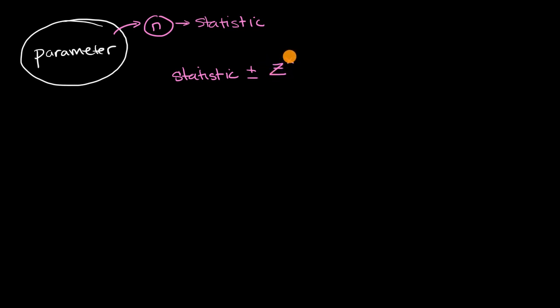And so we'll often say this critical value z star, and this will be based on the number of standard deviations we want to go above and below that statistic. And so then we'll multiply that times the standard deviation of the sampling distribution for that statistic.